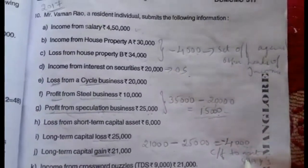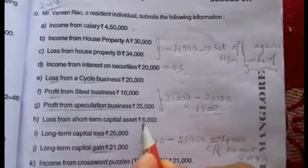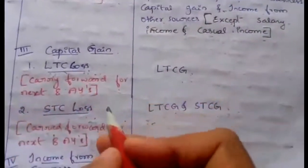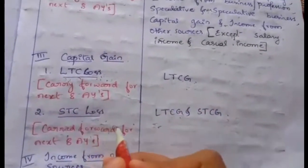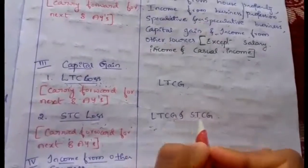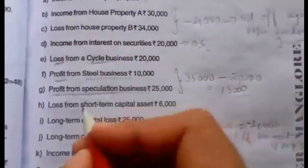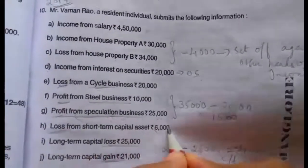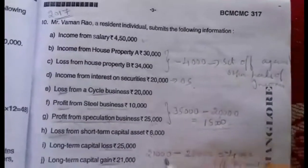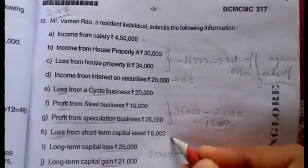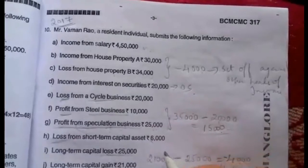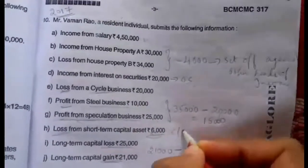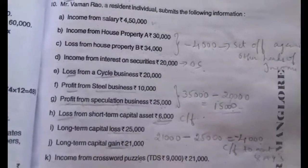Next, we have loss under the head short-term capital asset. Short-term capital loss can be set off only against long-term capital gain and short-term capital gain. We utilized the long-term capital gain to set off the long-term capital loss. Now we have the short-term capital loss of Rs. 6,000 which cannot be set off in the current assessment year because we don't have any short-term or long-term capital gain left. So this Rs. 6,000 is carried forward to next year.